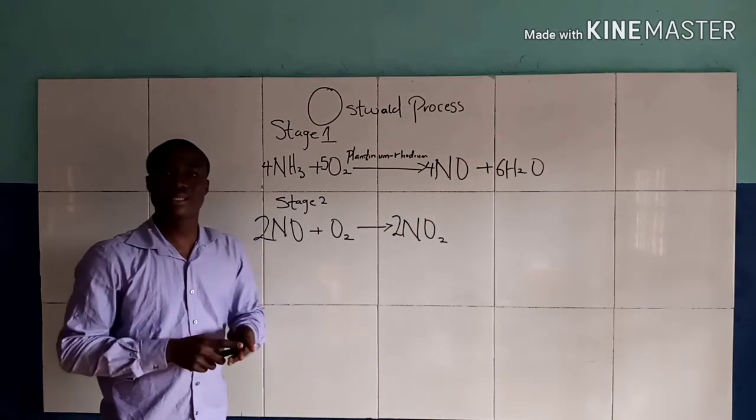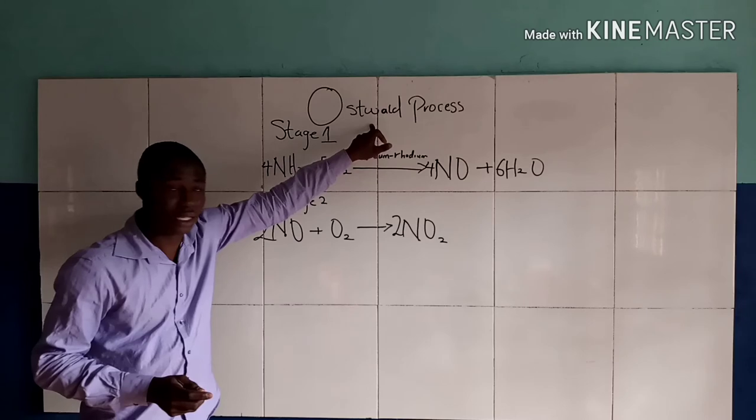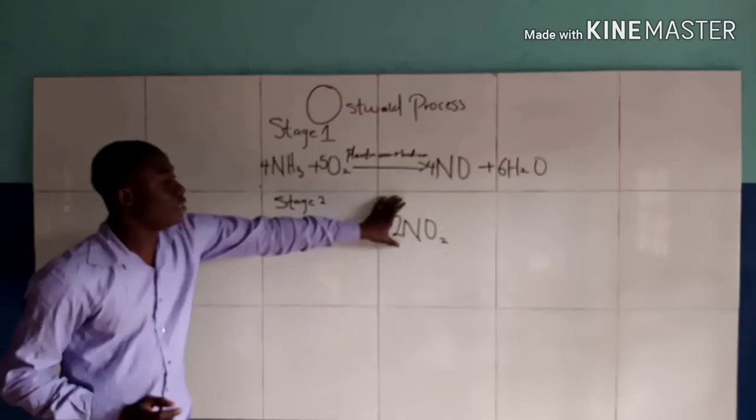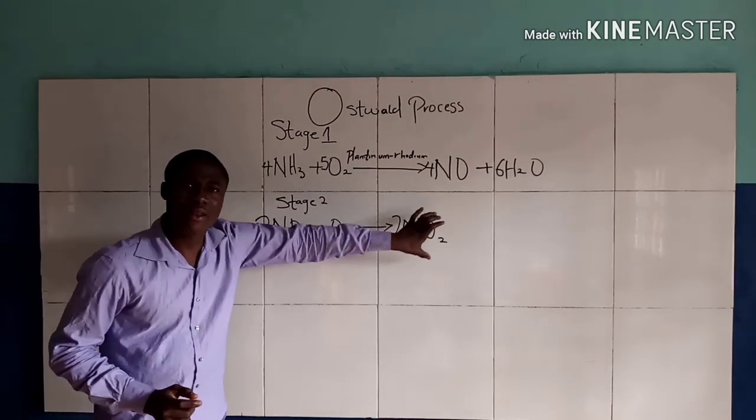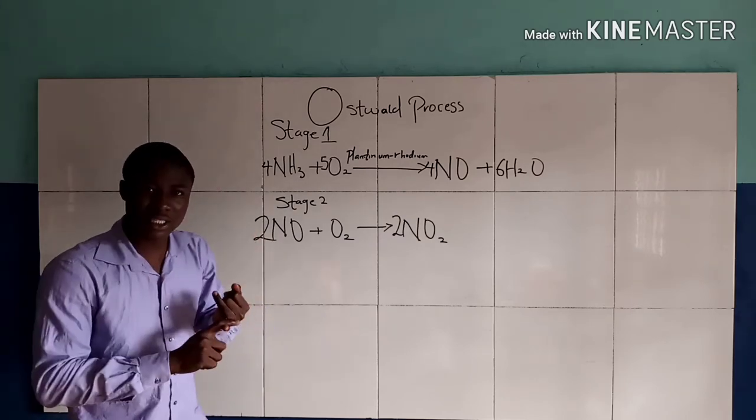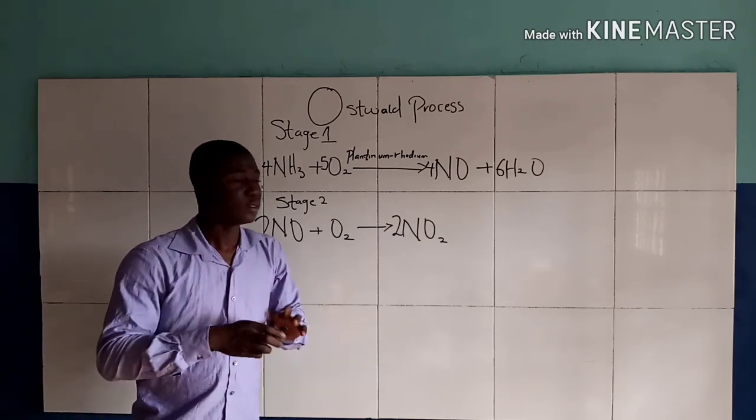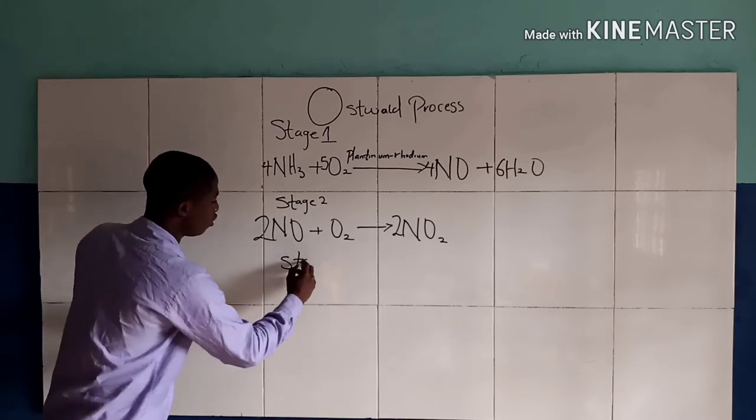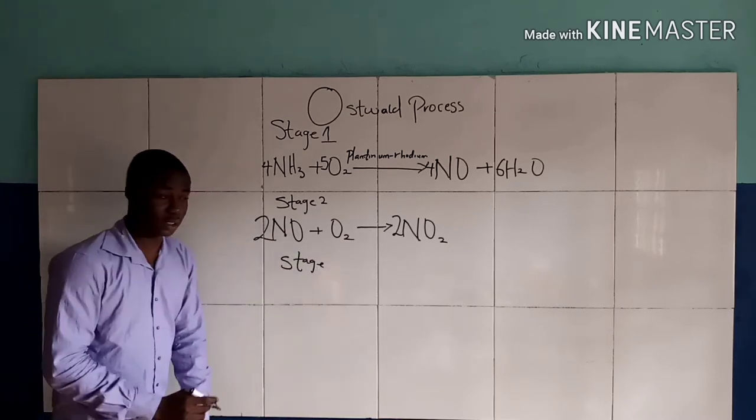Now, the final stage of the Ostwald process is the reaction of NO2, that is nitrogen 4-oxide, with oxygen and water. So, here is the third stage of the Ostwald process.